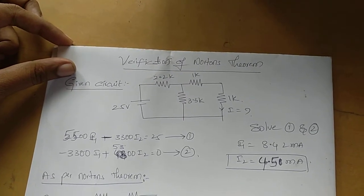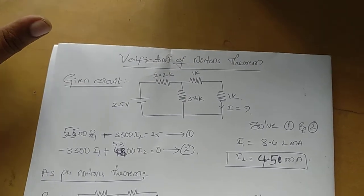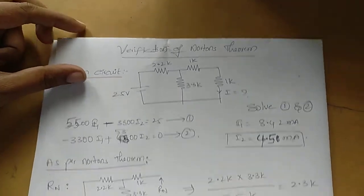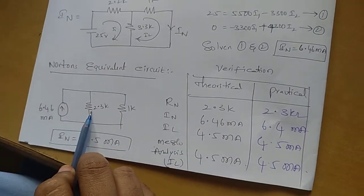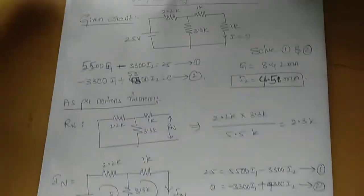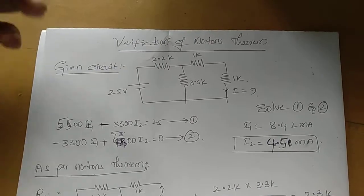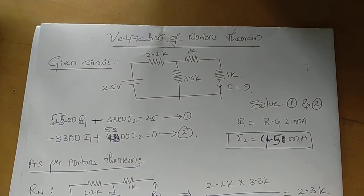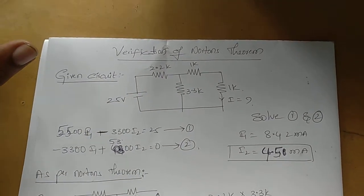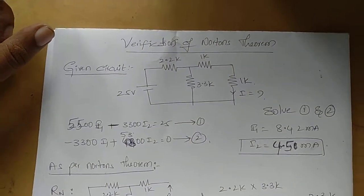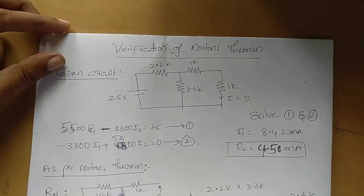What is Norton's theorem? The total network is reduced into a current source in parallel with a resistance. Any number of resistors, any number of voltage sources — if the network has these, the total network is reduced into a current source in parallel with a resistance.